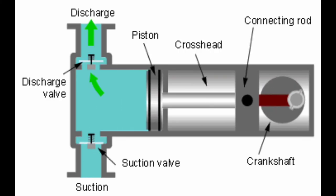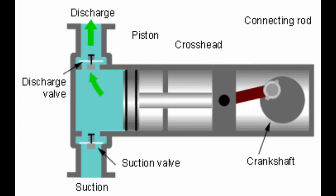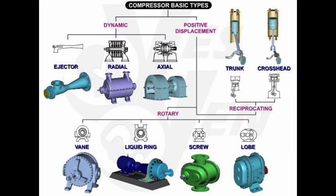Positive displacement compressors can be further broken out into reciprocating types, where the piston style predominates, and rotary types such as the helical screw and rotary vane types of air compressor. Compressors may be characterized in several different ways but are commonly divided into types based on the functional method used to generate the compressed air or gas.